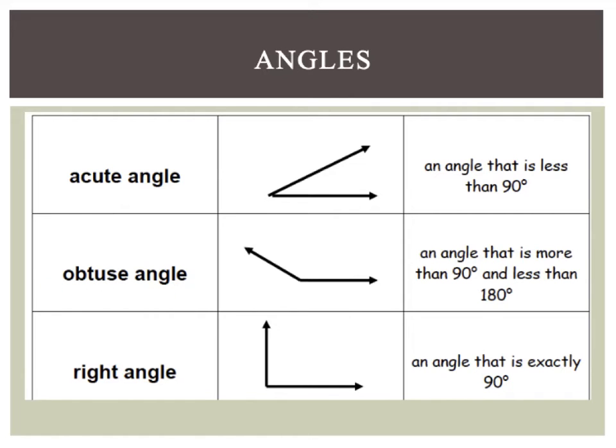We have an obtuse angle, which is an angle that is more than 90 degrees. But remember, it's less than 120. And then we have the right angle, often characterized by the little box in the corner there. The right angle is an angle that measures exactly 90 degrees.